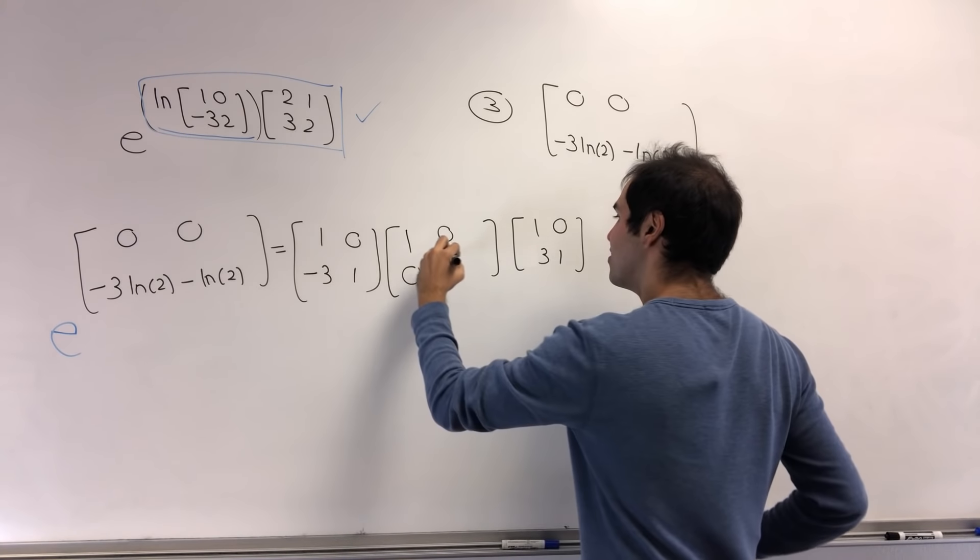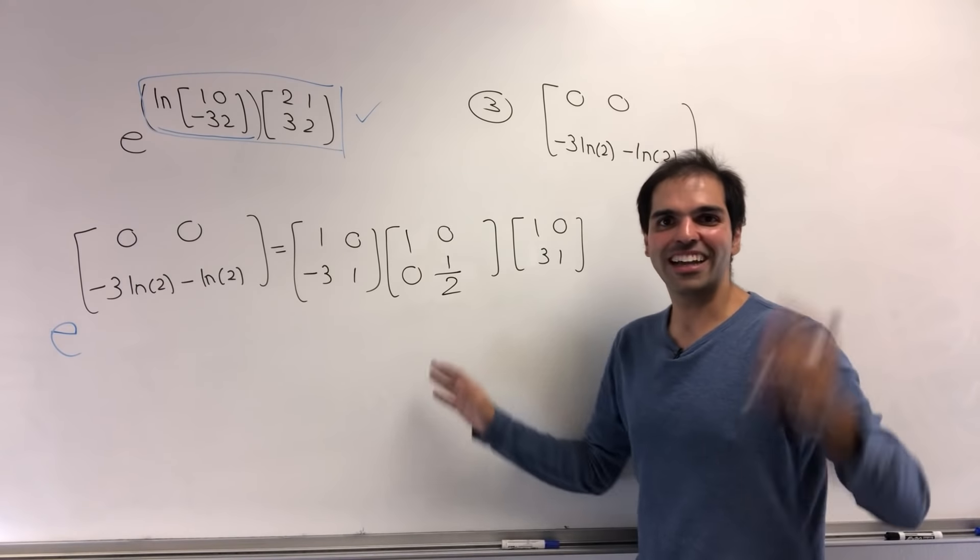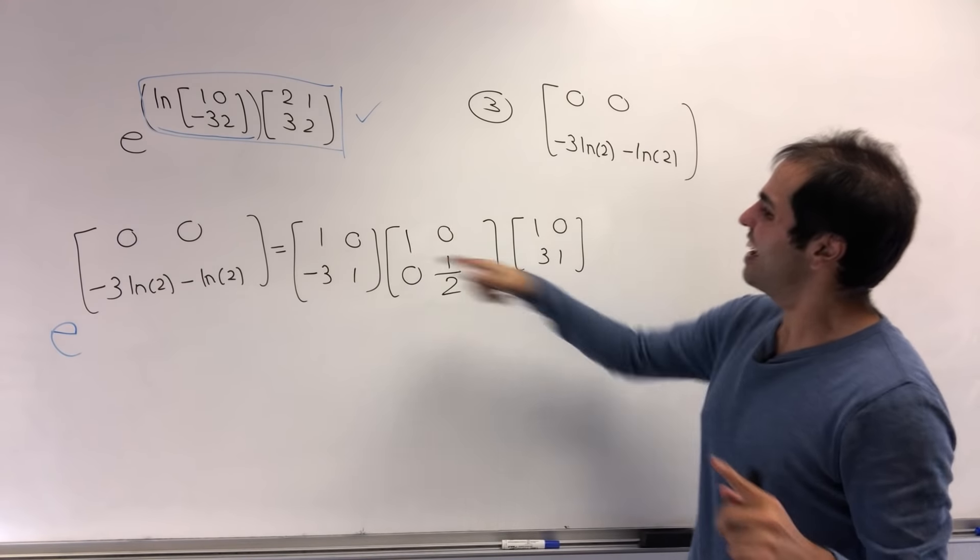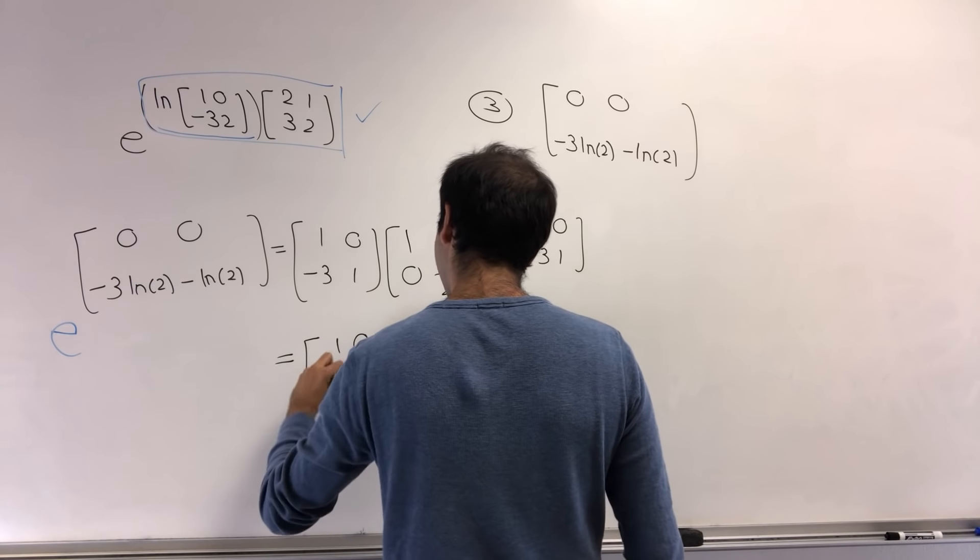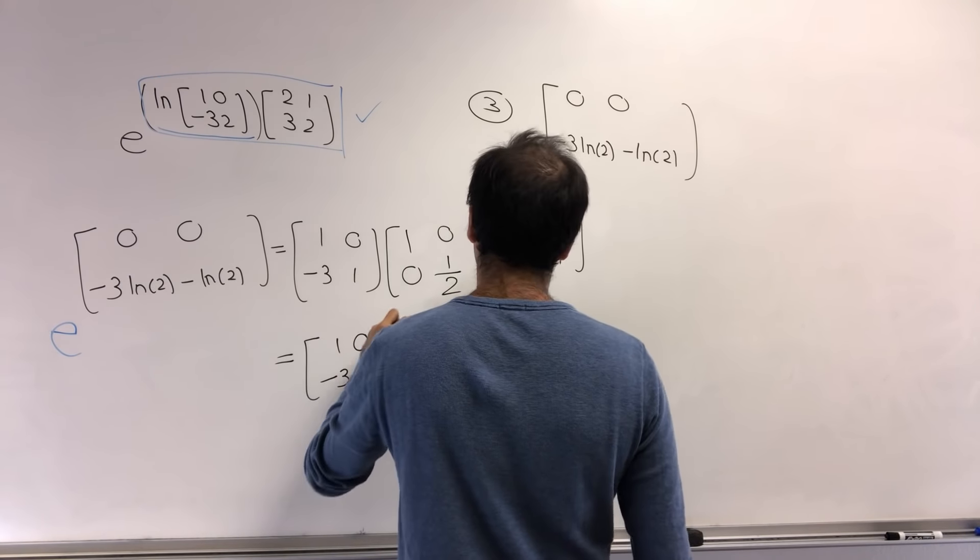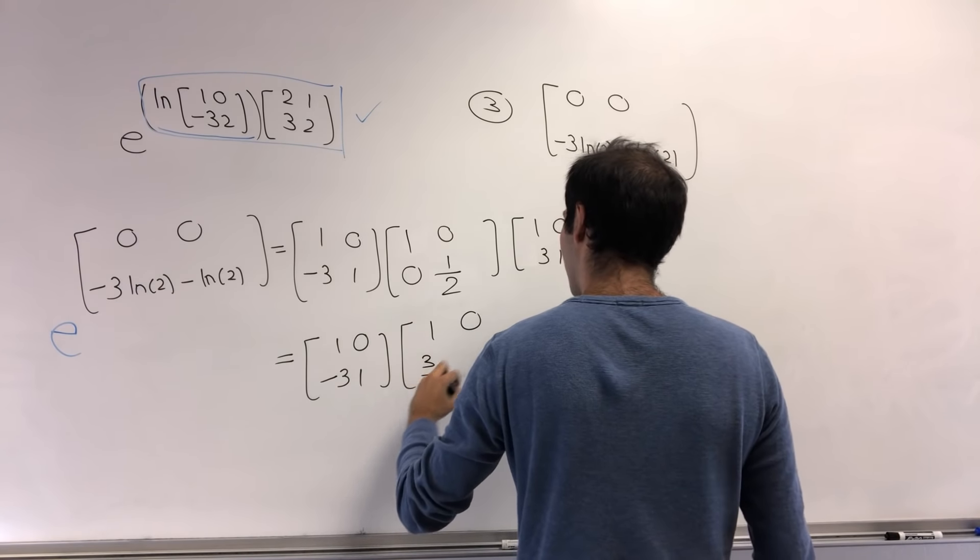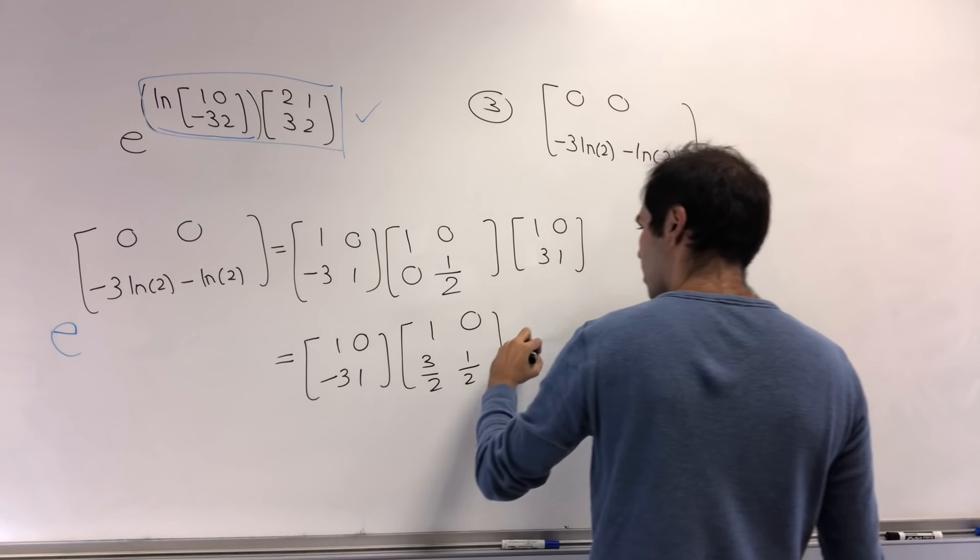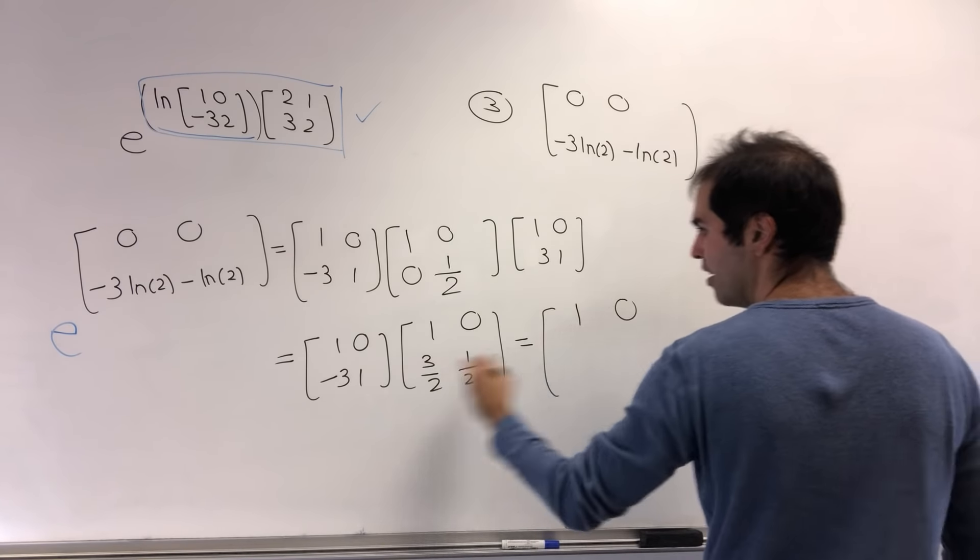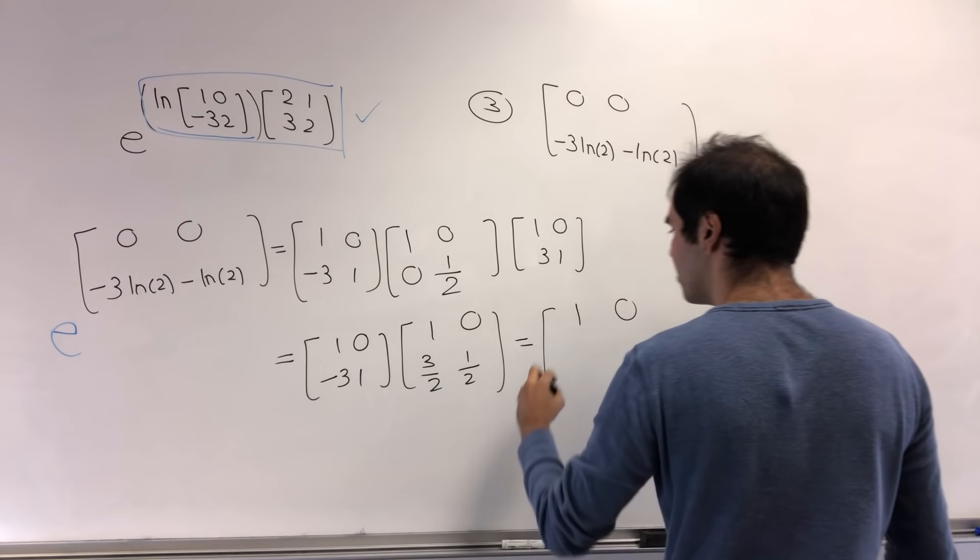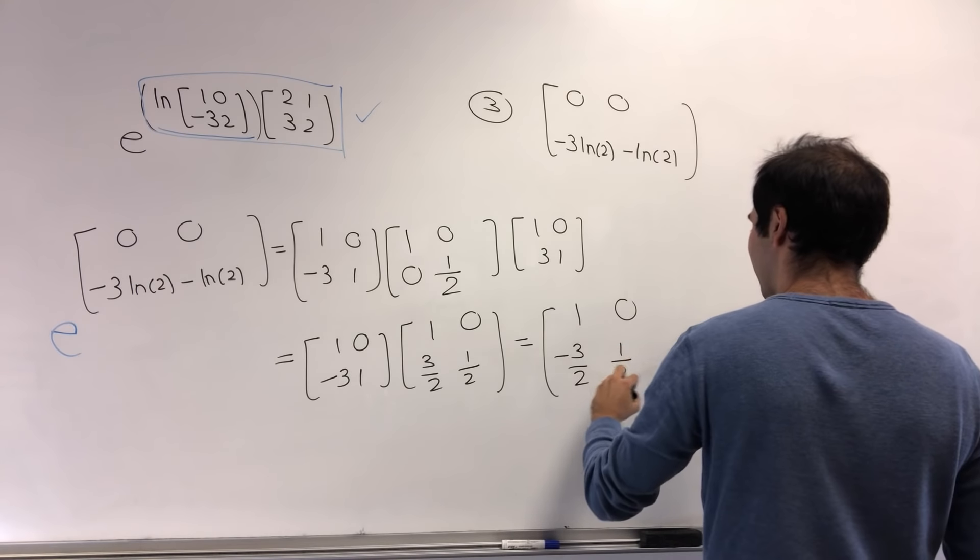So in fact, no more ln, that's nice. Sorry, ln, but it's my time to shine now. Okay, and then what we get is 1, 0, minus 3, 1. And then we get 1, 0, I believe 3 halves, 1 half, which now becomes just 1, 0, and then minus 3 plus 3 halves, so minus 3 halves, and then 1 half.